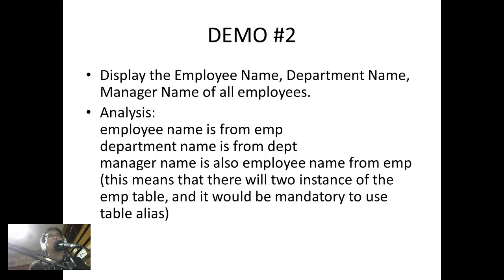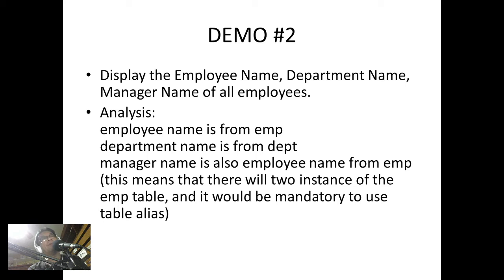Now let's look at another example: display the employee name, department name, and manager name of all employees. In our analysis, the employee name comes from the M table, the department name from the depth table. But the manager name is also an employee name, so it also comes from the M table. This means there will be two instances of the M table, making it mandatory for us to use table aliases.